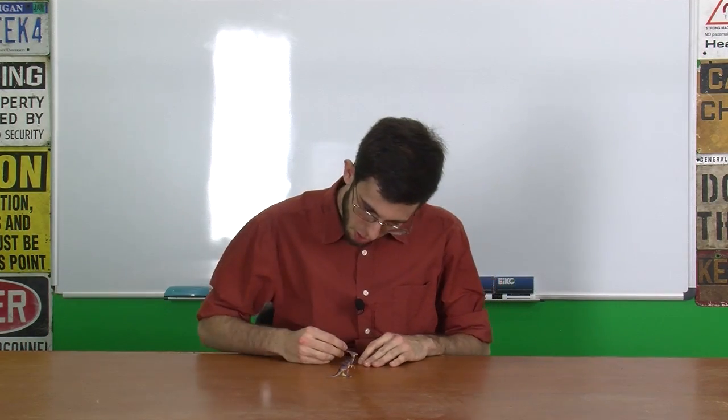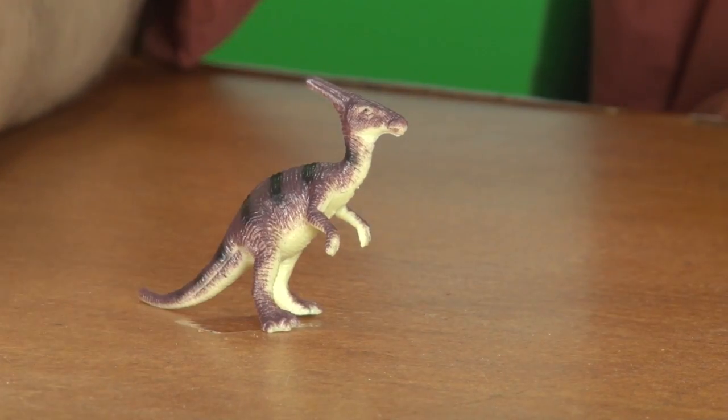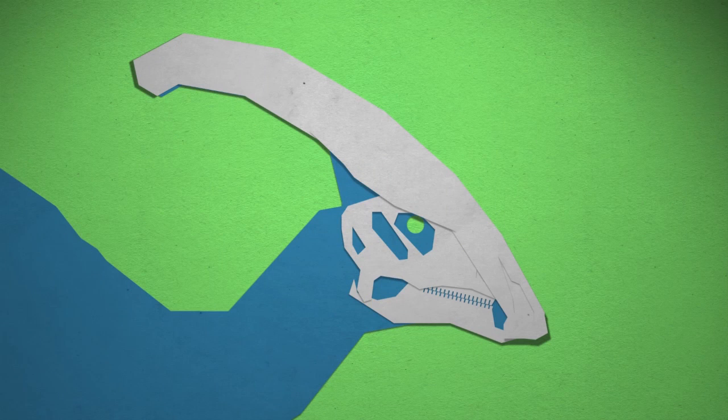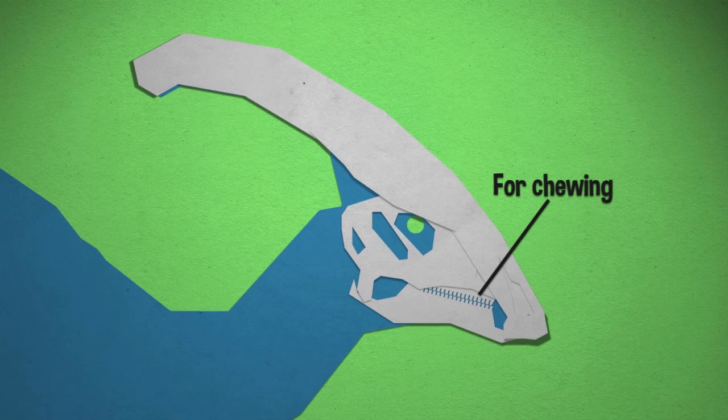It doesn't look like they've given any appearance for it having a beak on the front of its mouth. That's kind of important. It had the chewing batteries, like any ornithodiran, but had the beak in the front for snipping.